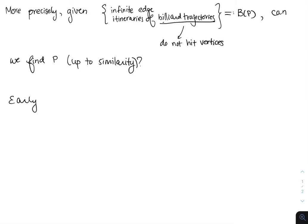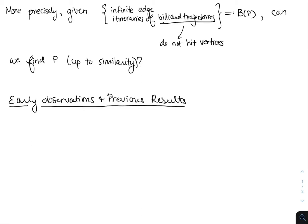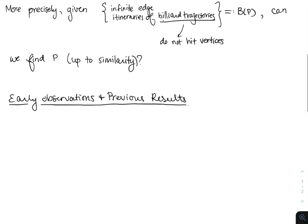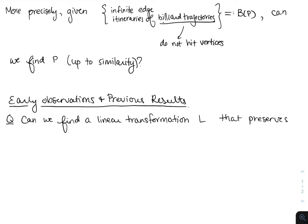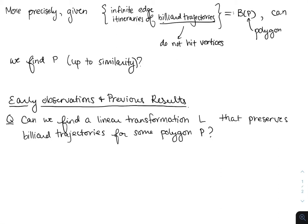And we're asking if we can find P up to similarity if we're given B of P. Let's look at some early observations and previous results. Let's ask a simpler question first: can we find a linear transformation L that preserves billiard trajectories for some polygon P? So a polygon P and a linear transformation L, so that when we apply L to P, it takes P to a new polygon and takes the billiard trajectories on P to billiard trajectories on L of P. So if we just think about some really simple cases, we can get some intuition for this.